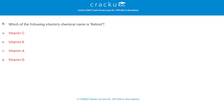Which of the following vitamins has the chemical name retinol? The correct answer is C, Vitamin A. It is a fat-soluble alcohol which is most prominent in fatty fish and especially in fish liver oils.